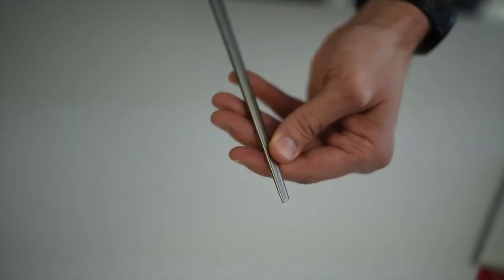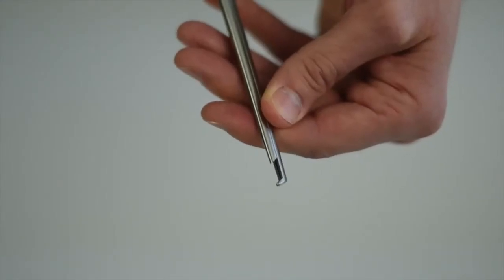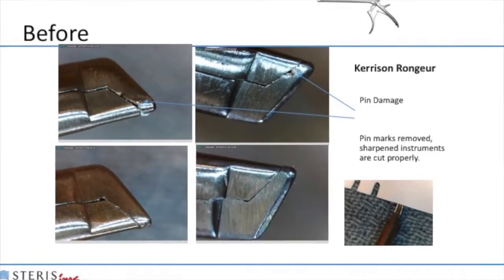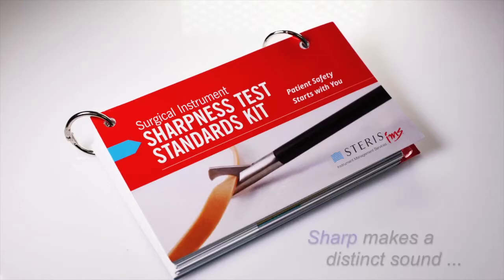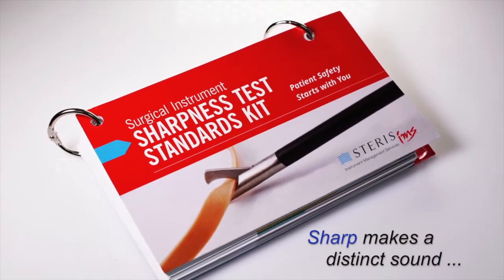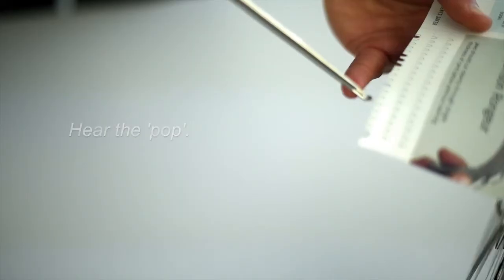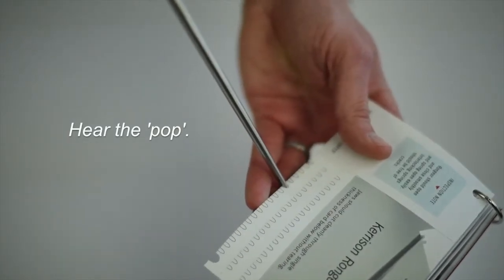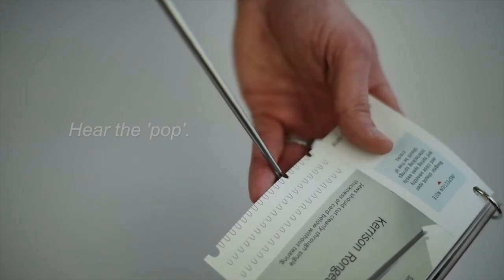Kerisons, just like scissors, have two sharp edges that have to work together to cut tissue. If one edge is sharp and the other isn't, it's not going to work. You should hear a pop and it should cleanly and crisply cut through the testing material.